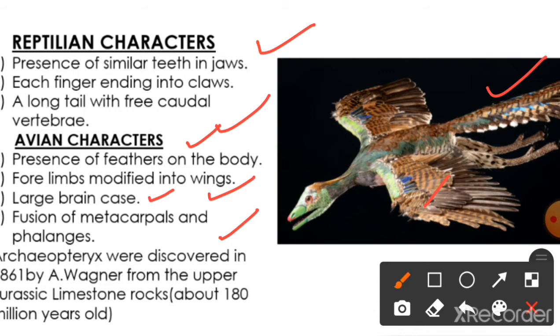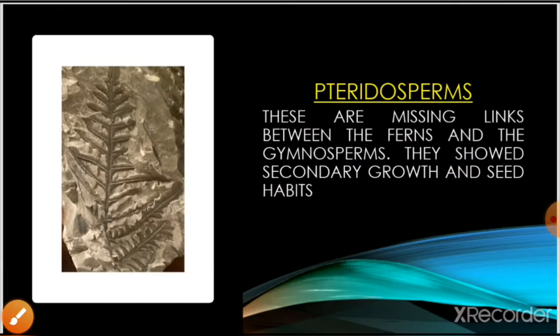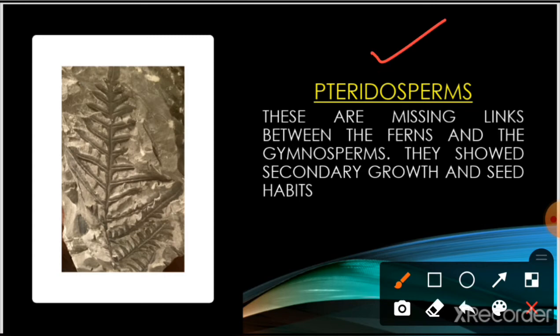Archaeopteryx was discovered in 1861 by Wagner from upper Jurassic limestone rocks, 180 million years old. Another missing link is the pteridosperms — they are missing links between the ferns (pteridophytes) and gymnosperms (naked seeds). They are called seed ferns, but they are extinct plants.